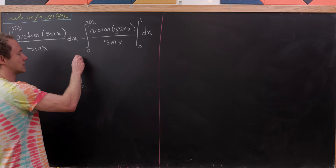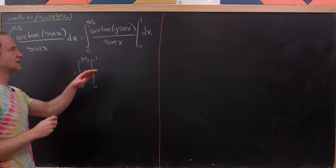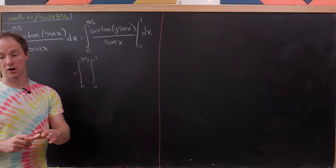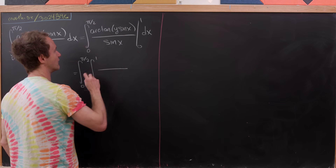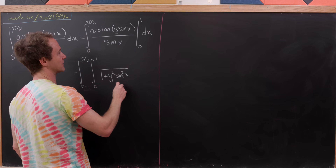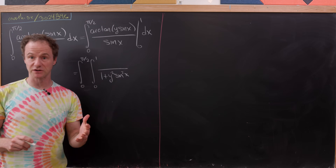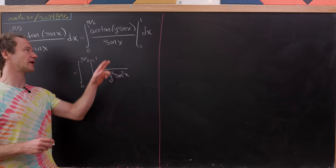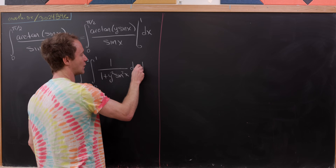That gives us the integral from 0 to π/2 and then the integral from 0 to 1. Recall that the derivative of the inverse tangent is 1 over 1 plus the argument squared, and then you need to take the derivative of the argument as well. So we get 1 over 1 plus y² sin²x, and then the derivative of y · sin x with respect to y is simply sin x in the numerator, canceling the sin x in the denominator, leaving just 1, then dy dx.